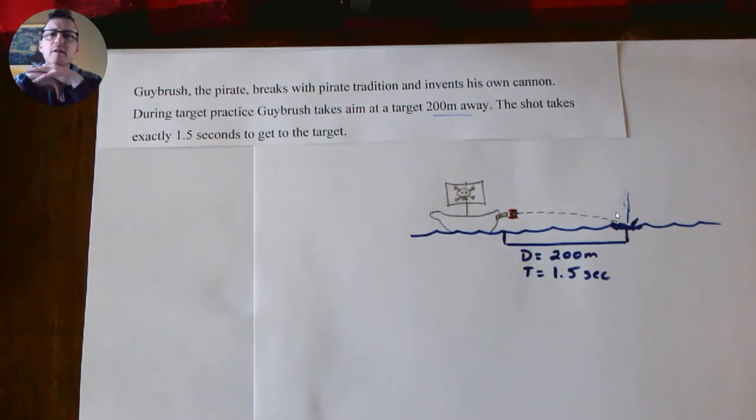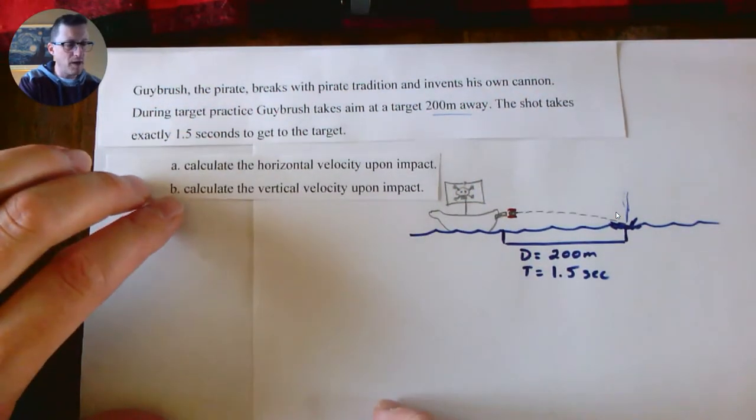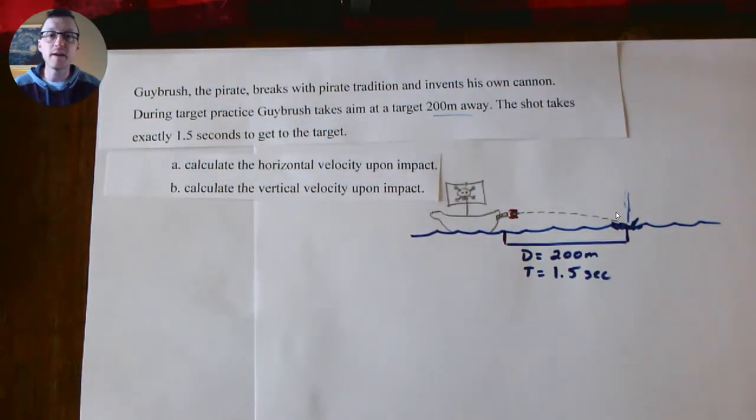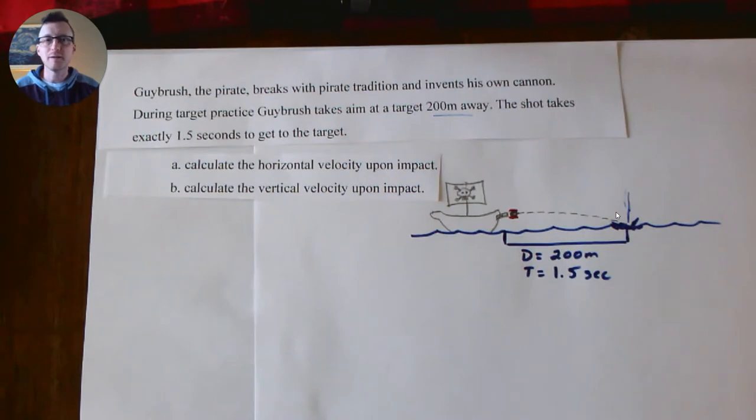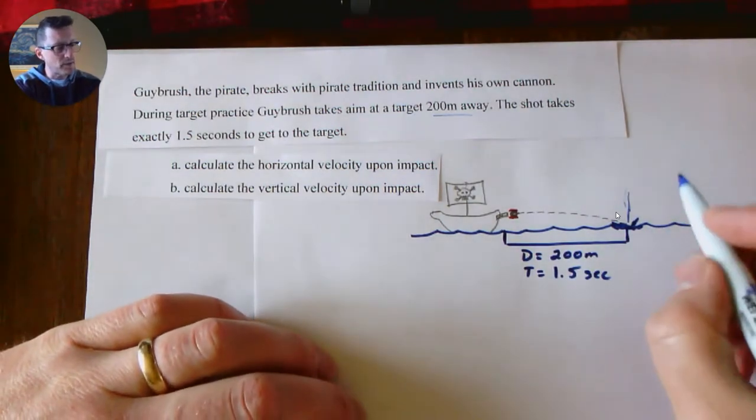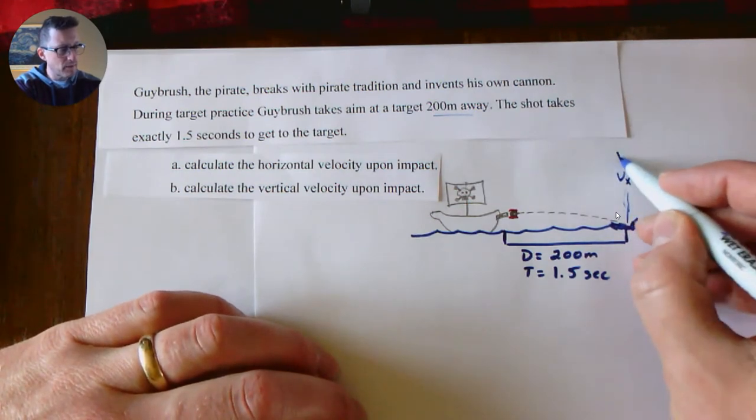We know how much time it takes to get that 200 meters—it takes 1.5 seconds. Well, some things that a physics person would like to know are things like: what would be the velocity of the cannonball, its horizontal and its vertical components on impact? In other words, when it lands, when the cannonball gets here, what is our Vx and our Vy?